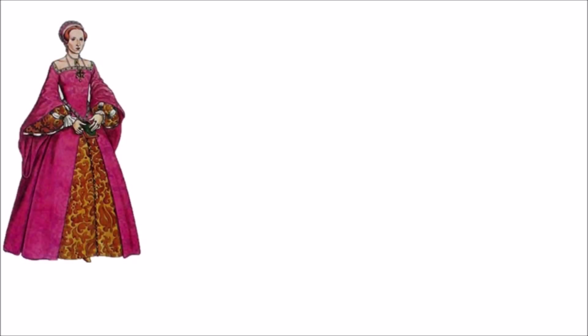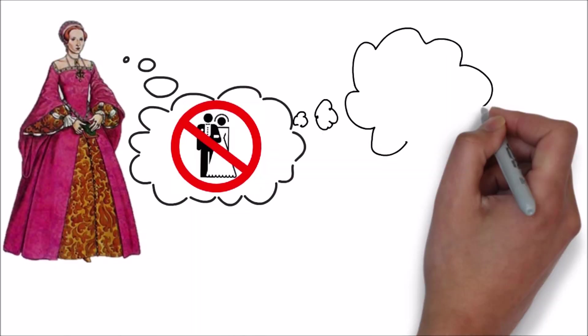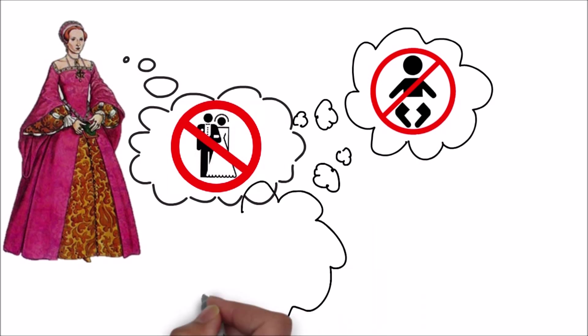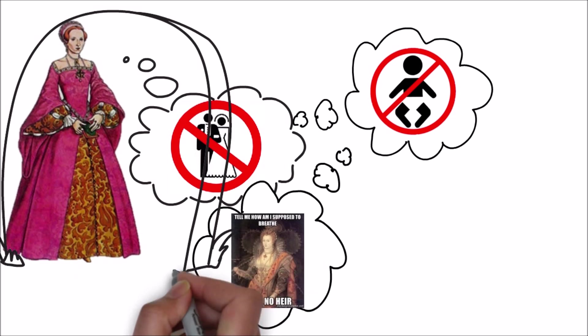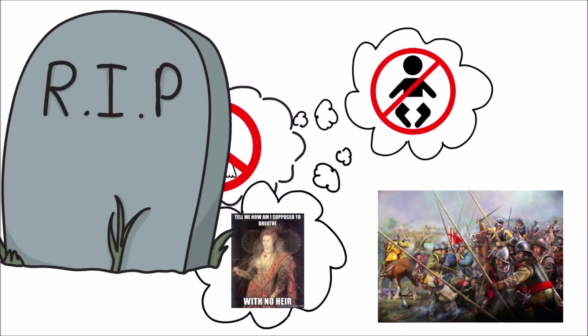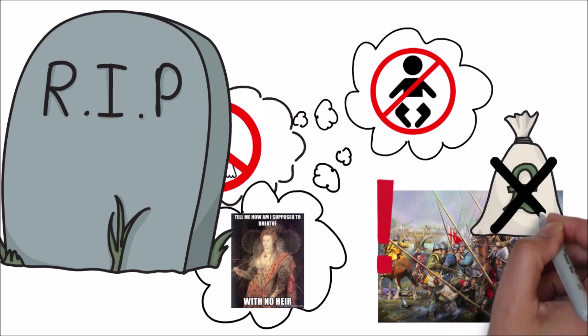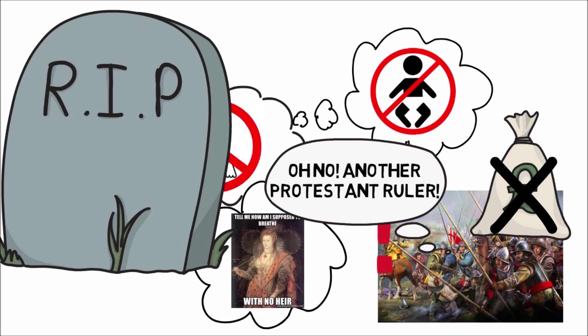The other big problem is the uncertainty. Elizabeth is refusing to get married, refusing to have children, and has even refused to name an heir. If she dies without an heir this could lead to civil war, which could potentially mean a loss of power and wealth for the Northern Earls — particularly if another Protestant monarch takes over.